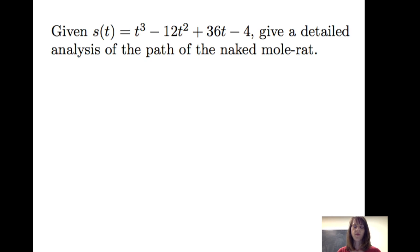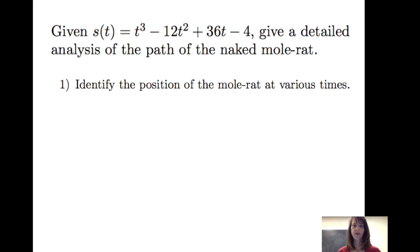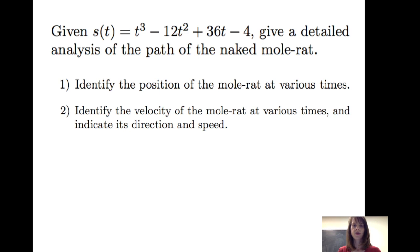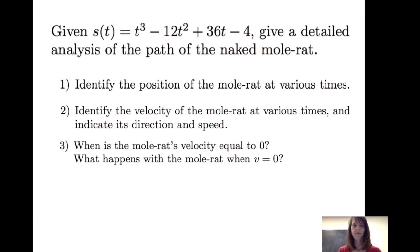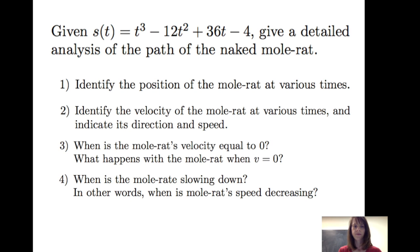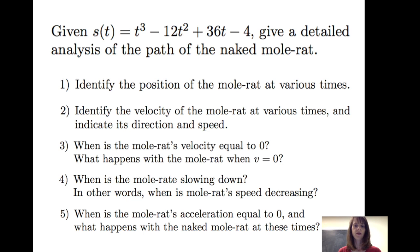We're going to give a detailed analysis of the path of the naked mole rat. Specifically, we'll look at the position at various times, consider the velocity at various times and indicate direction and speed, determine when the velocity is equal to zero, when the mole rat is slowing down, and consider the mole rat's acceleration — when it equals zero and what happens at those times.